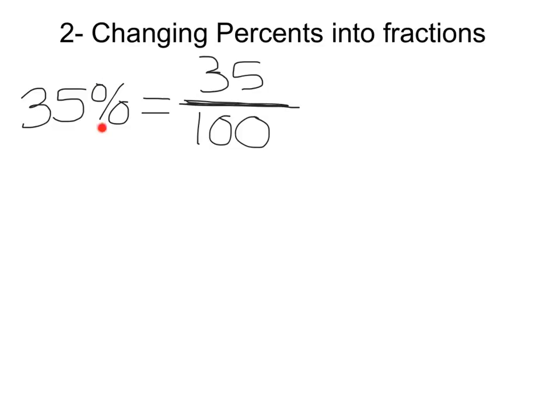So when changing percents into fractions, it's pretty easy because we use the meaning of the word percent to write it in fraction form. Let's get a first example. 35% can be written as a ratio or a fraction of 35 per 100. Another way I like to think of it is that the percent symbol is made up of a 1 and 2 zeros, which means we want to put the 35 over 1 and 2 zeros.